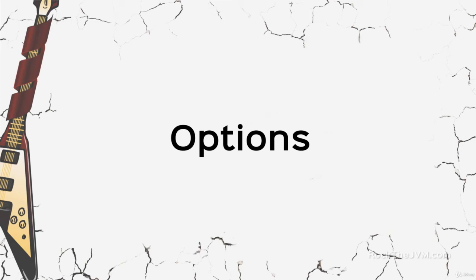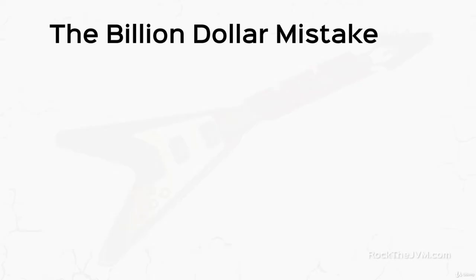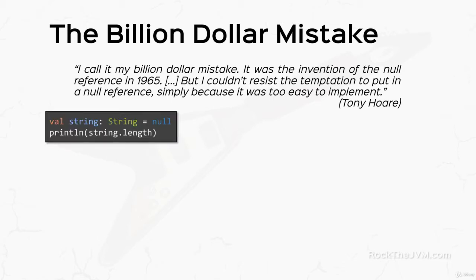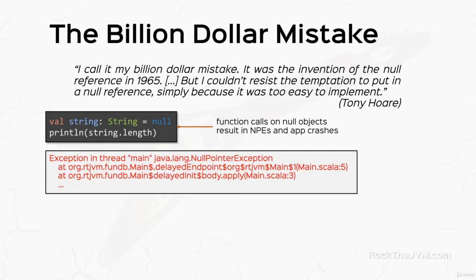Daniel is back and in this video we're going to talk about options, which are a special type of collection in Scala. Options solve what Tony Hoare calls his billion-dollar mistake — the invention of the null pointer in 1965. He says he couldn't resist the temptation to put in a null reference because it was too easy to implement. Null references are basically the bane of our existence and cause the crashes we know as null pointer exceptions.